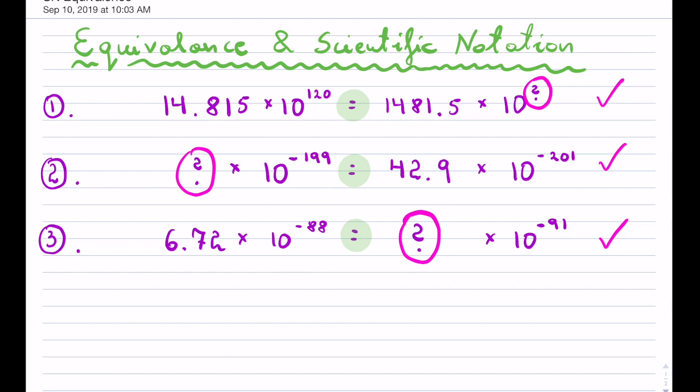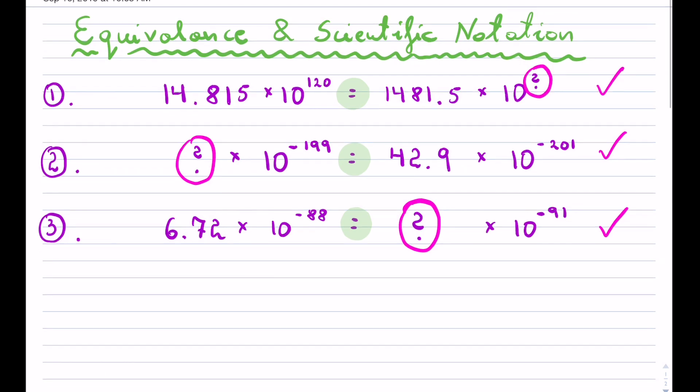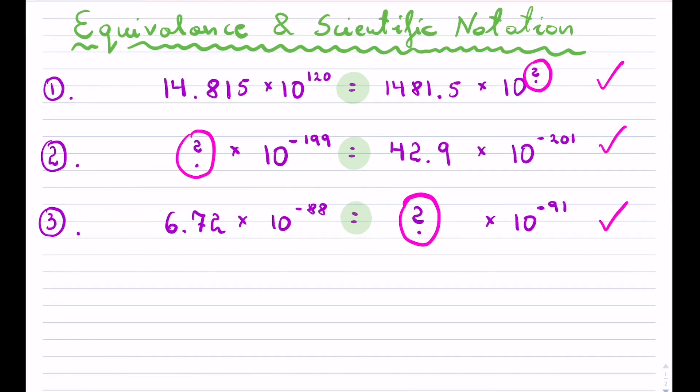The way that they have written these questions they look like they're in scientific notation but they're not because the mantissa, your leading number, in all your cases is not between 1 and 10 except here on the third one.